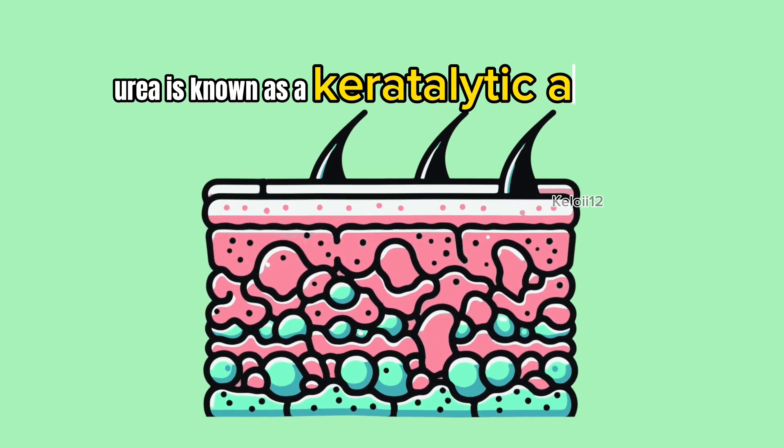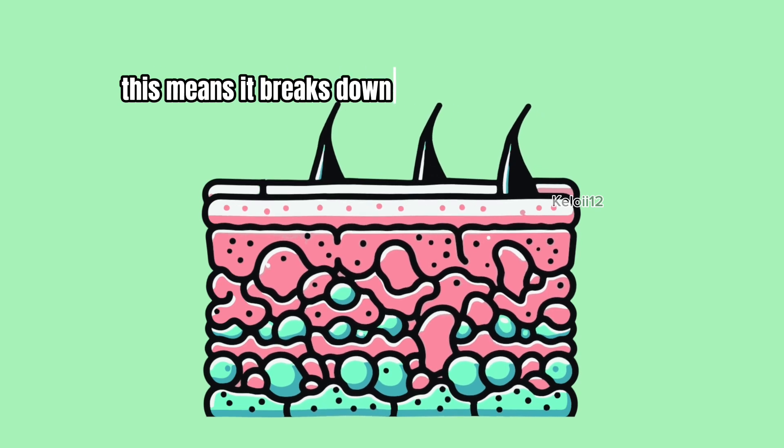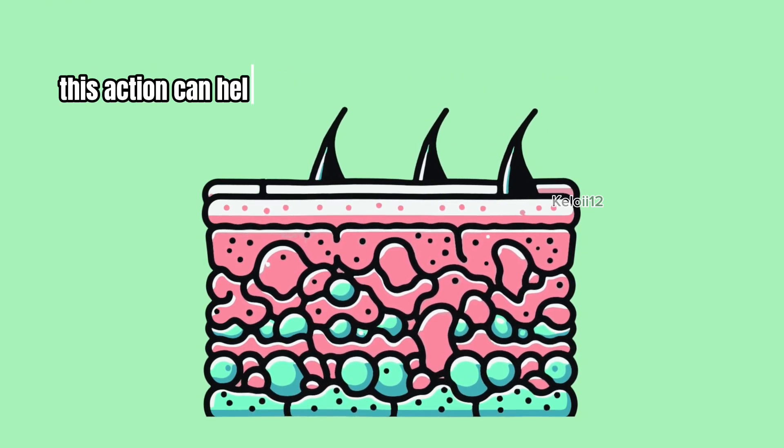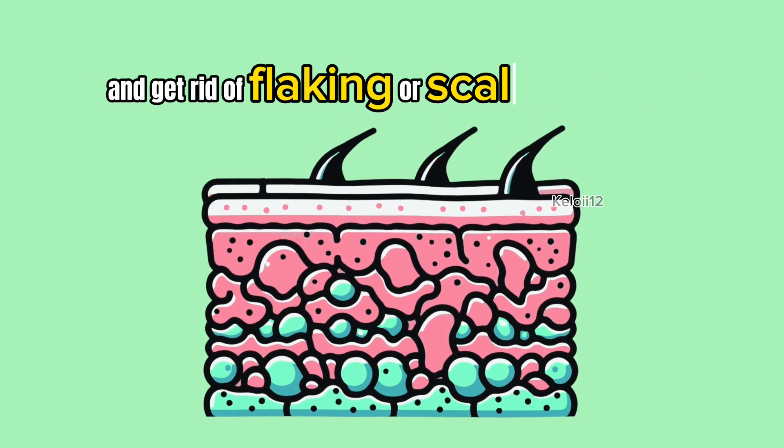Urea is known as a keratolytic agent. This means it breaks down the protein keratin in the outer layer of your skin. This action can help reduce dead skin buildup and get rid of flaking or scaling skin.